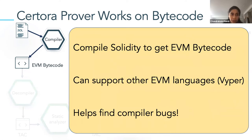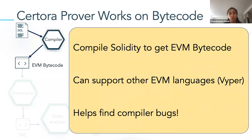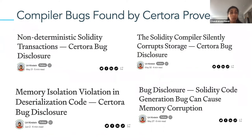The first thing the prover does is take the Solidity program and compile it using existing Solidity compilers. What you get is EVM bytecode. This design decision — working at the bytecode level — has a few advantages. One is that it's possible to support other EVM-based languages in the future, since if they all compile to bytecode, it's easier than working at the source level. Another advantage is that because we work at the bytecode level, we don't actually have to trust the compiler. In fact, because of this decision, we have been able to find multiple bugs in the Solidity compiler over the years.